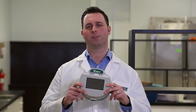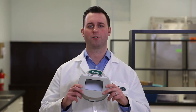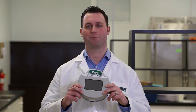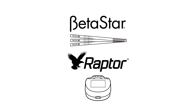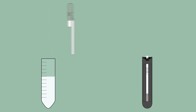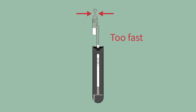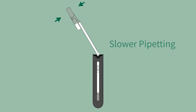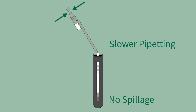Now a few best practices for using the Raptor Integrated Analysis Platform. When using Neogen's Betastar test strips with the Raptor Reader, one easy way to avoid user error is pipetting carefully. When pipetting your milk sample into the Raptor cartridge, don't squeeze too quickly — the force might cause milk to spill out of the cartridge and into the reader, or form bubbles. Squeeze smoothly and evenly so the milk stays where it belongs, better ensuring accurate results and preventing damage to the Raptor Reader.